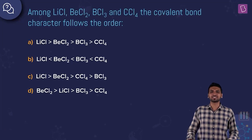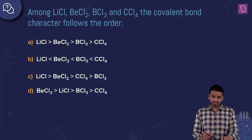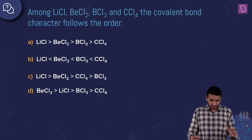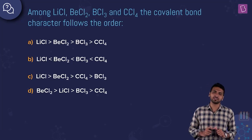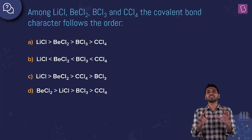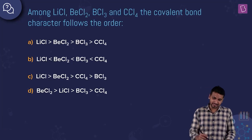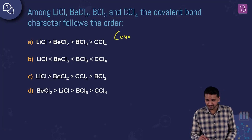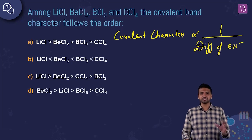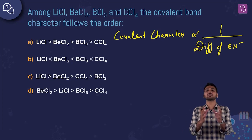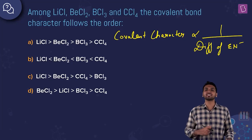Here we have an order-based question. Among LiCl, BeCl₂, BCl₃, and CCl₄, the covalent bond character follows which order? You can approach this using Fajan's rule or the difference in electronegativity. Using electronegativity difference: covalent character is inversely proportional to the electronegativity difference between the combining atoms.